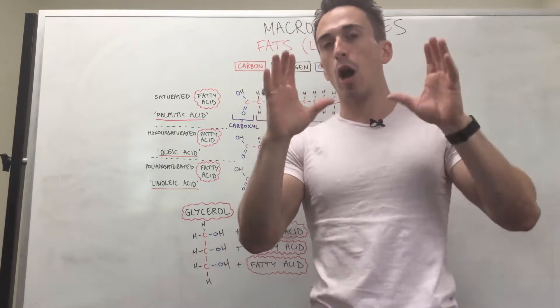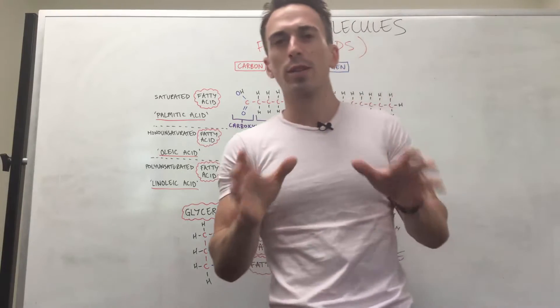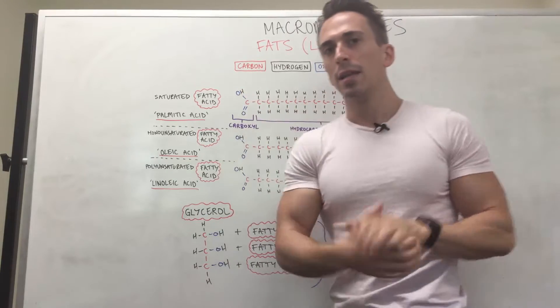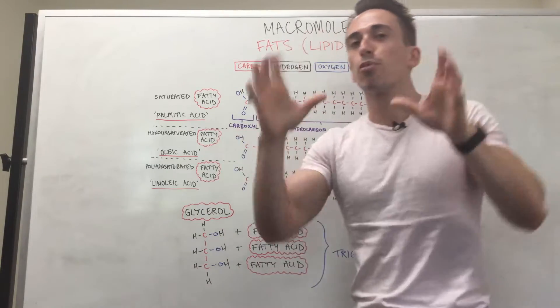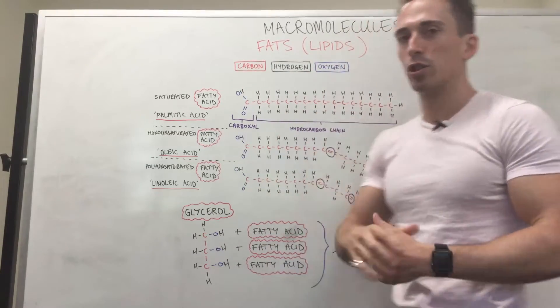Now I spoke about carbohydrates. They're also made up of carbon, hydrogen, and oxygen. But what you'll find with carbs is that usually the amount of carbons are matched by the amount of oxygens. Now here for fats, what you'll find is it's predominantly just carbons and hydrogens with a very small amount of oxygen molecules attached.